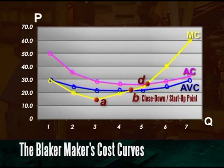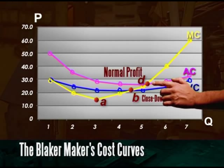At point D, however, Blakermacher earns a normal profit. This is where the average cost is equal to the marginal cost and total cost is equal to total revenue. This is also the point where the average cost is at its minimum.